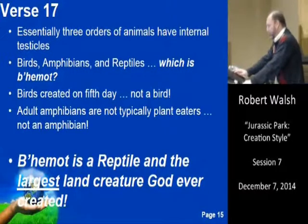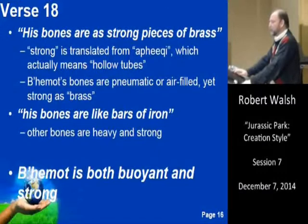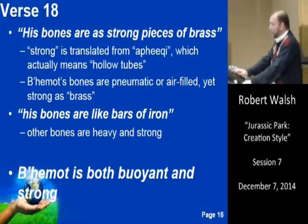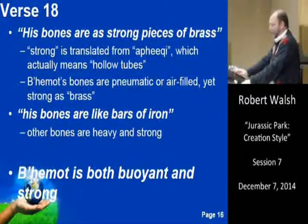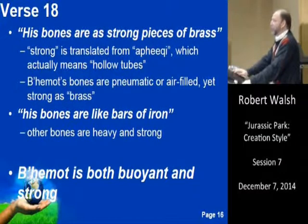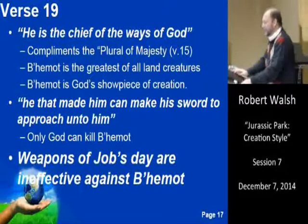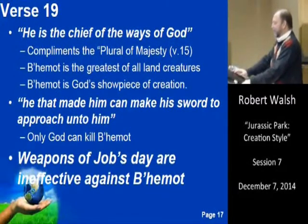His bones are as strong as brass — 'strong' is translated from 'athike,' which actually means hollow tubes. So his bones are hollow and pneumatic, but still as strong as brass. His other bones are like bars of iron — heavy and strong. This makes Behemoth both buoyant and strong, a rather unique combination that we see reflected in the fossil record.